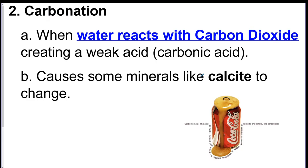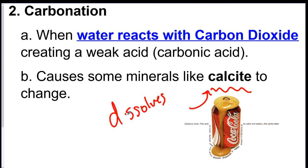The second type of chemical weathering is called carbonation. This is when you have water reacting with carbon dioxide, which is in the air, and it becomes an acid called carbonic acid. If you remember from class, we talked about calcite a lot — calcite bubbles with acid and dissolves. This carbonation process is going to be really important because it creates carbonic acid, which can come down in rain and land on rocks that have calcite in them, which will dissolve them away.